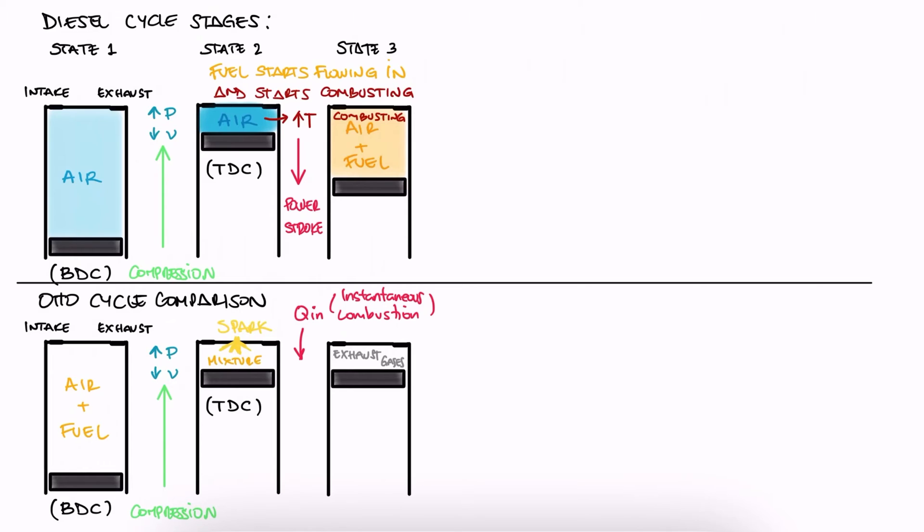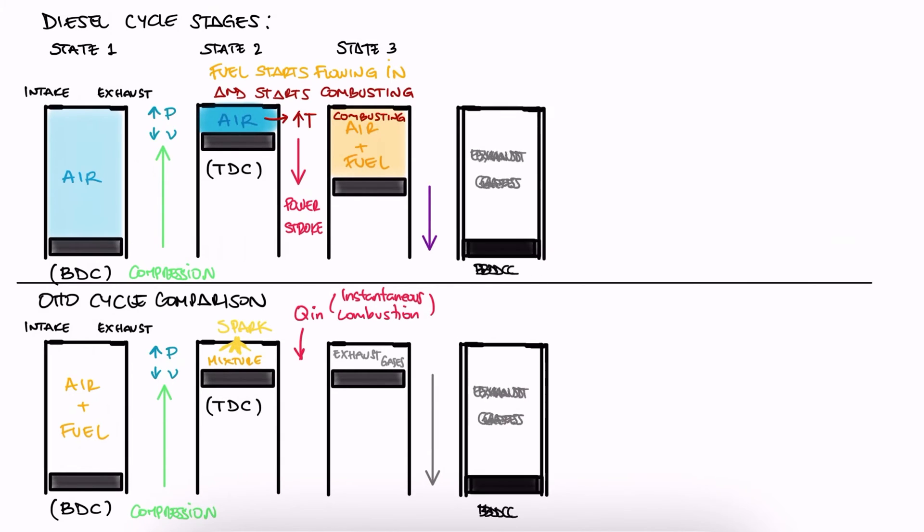Other than this, everything else is very similar to the auto cycle. After the fuel injection ends, the piston keeps pushing down. Once the piston reaches BDC again, the exhaust valves open, and the piston moves up to flush the exhaust gases.